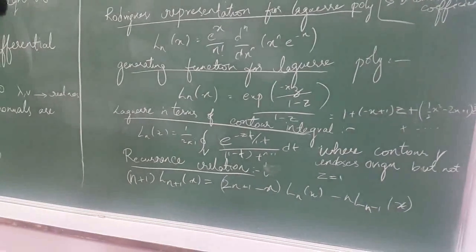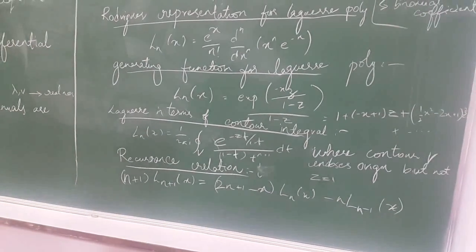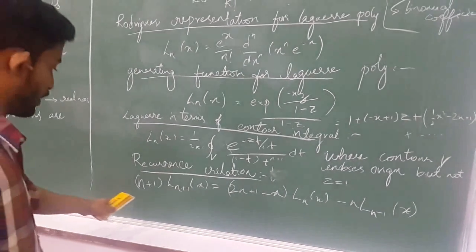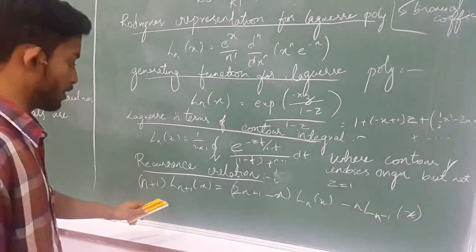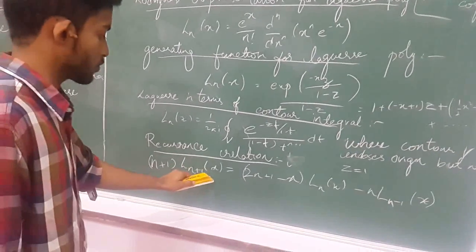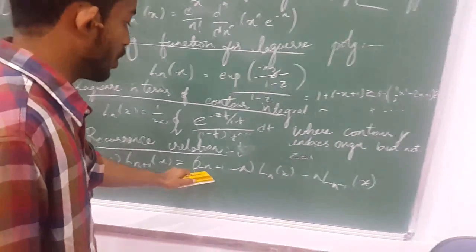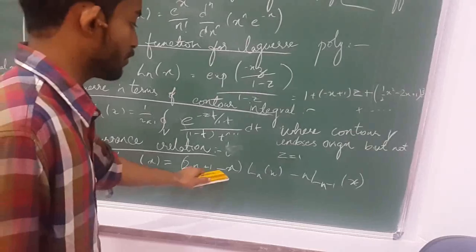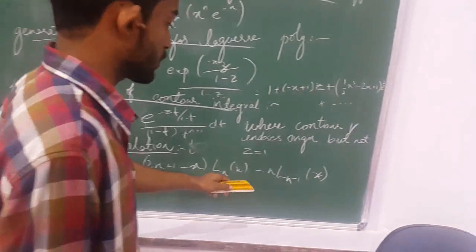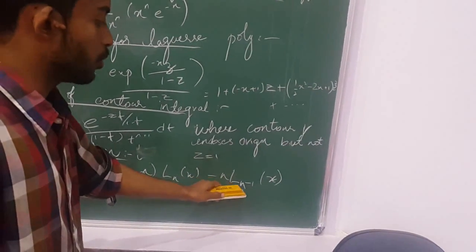The recurrence relation for Laguerre polynomials is: (n+1) × L_n(x) = (2n + 1 - x) × L_n(x) - n × L_(n-1)(x).